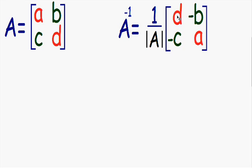Now let's take a look at the green diagonal. Notice in this green diagonal, the C and the B actually stay in the same position as the original matrix. However, in the inverse, the signs switch. In the original matrix they were positive, and in the inverse now they're negative.